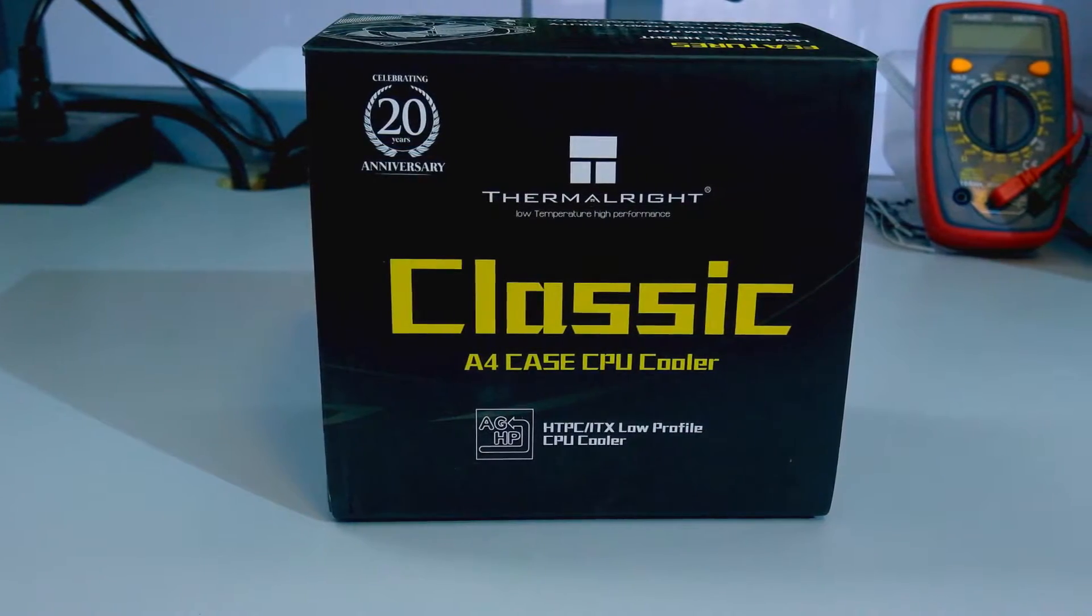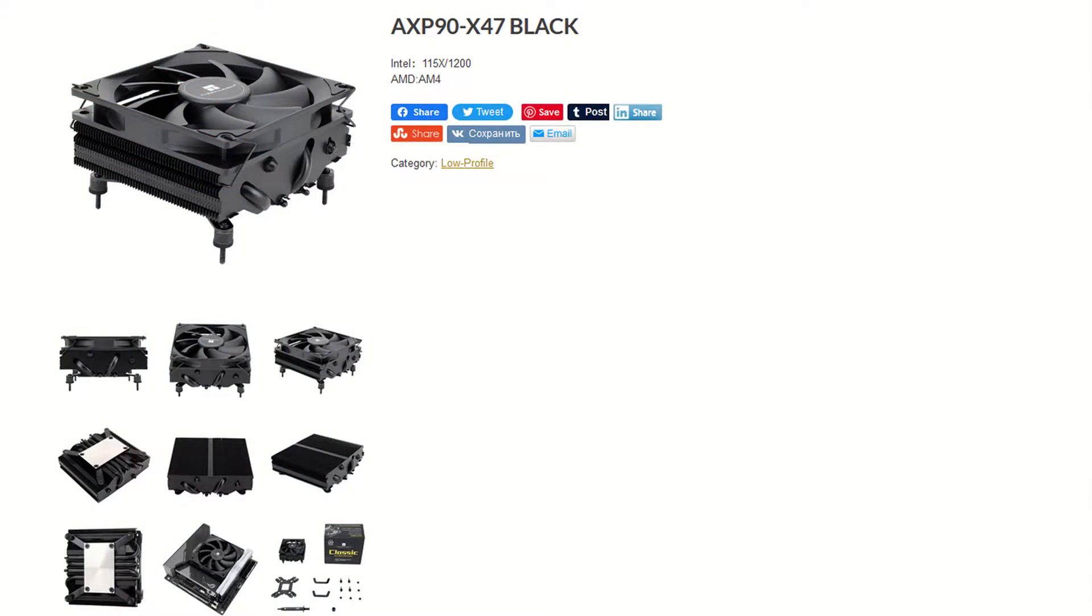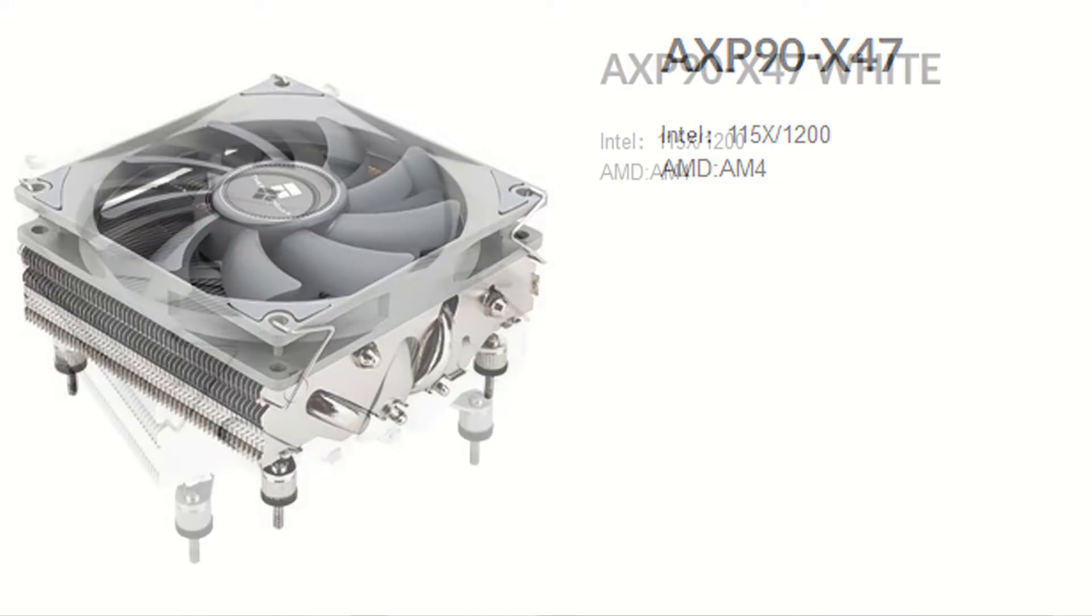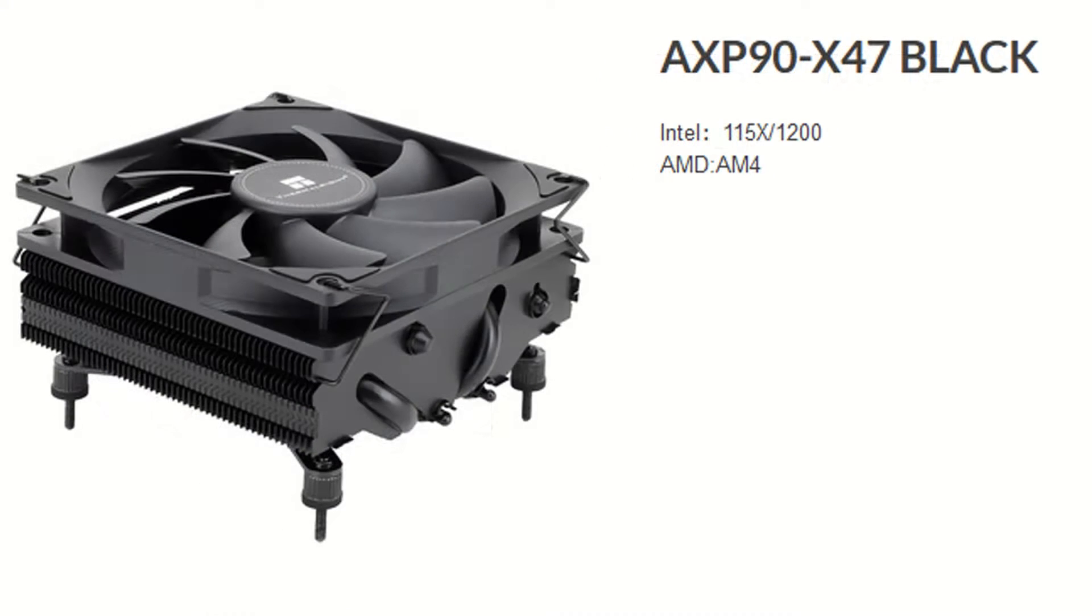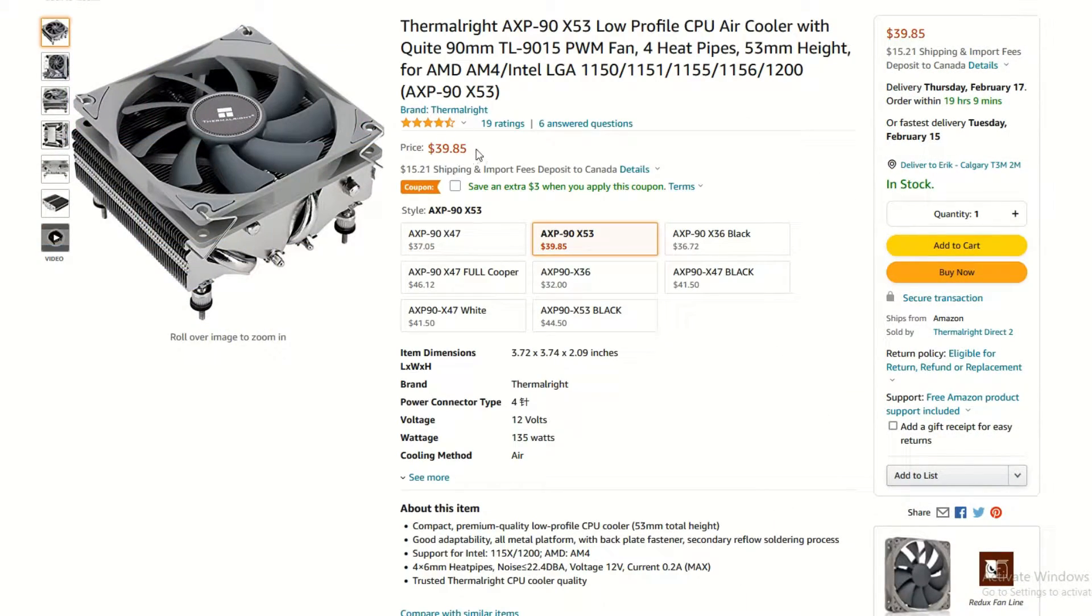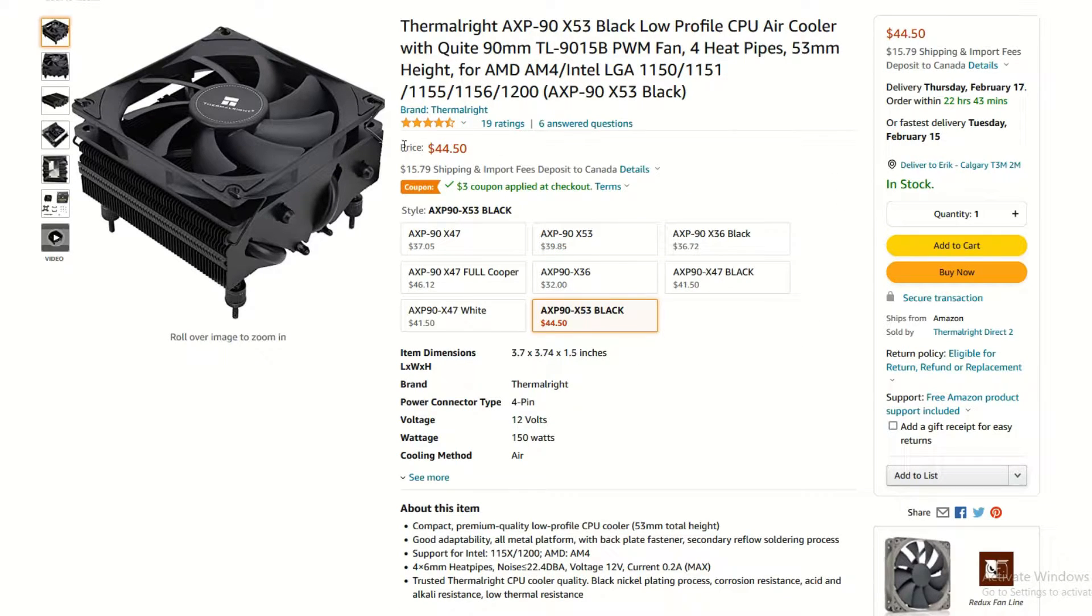There are three different models of the AXP90. There is the X53, which is what I have here today. There is the X47 and the X36. Each model has multiple color options. There are four color options in total: bare aluminum with gray fan, white model, black model, and full copper model, but not all models have all the color options. The pricing for the X53 is 40 US dollars for the bare aluminum model and 45 US dollars for the black model.